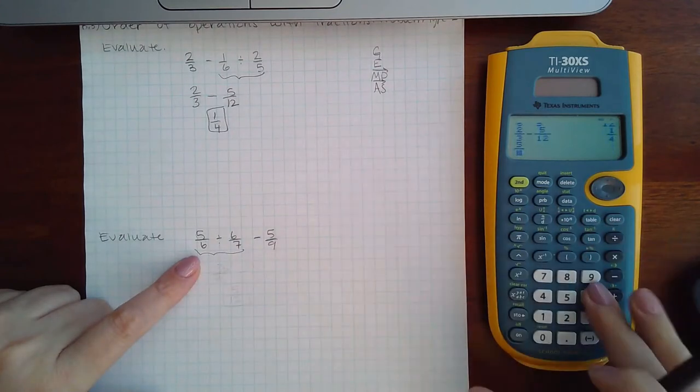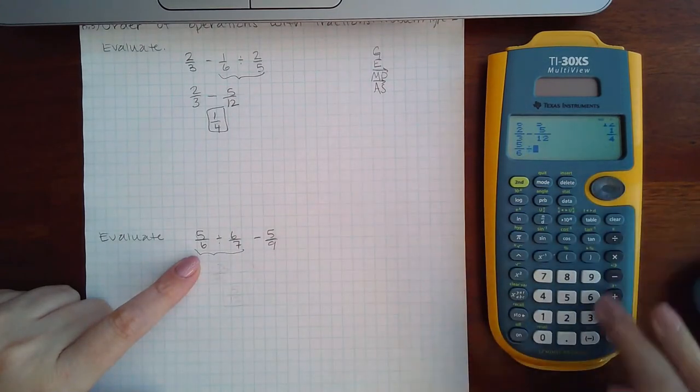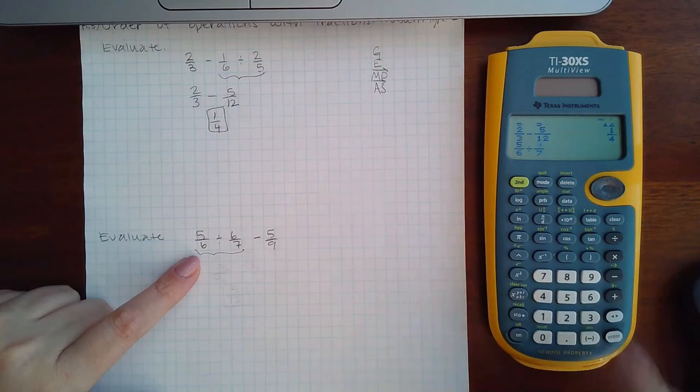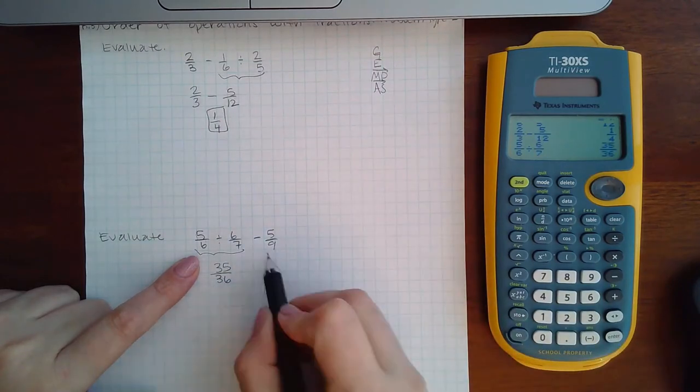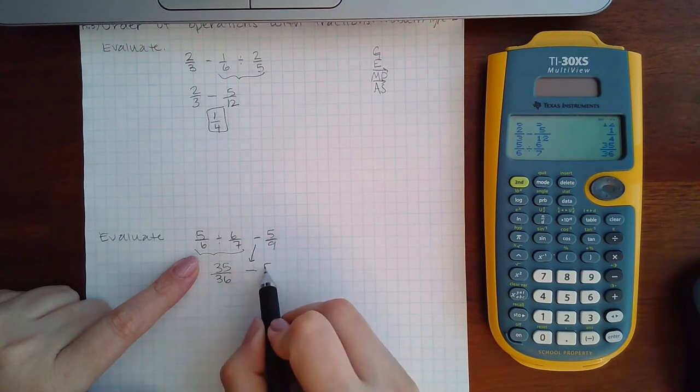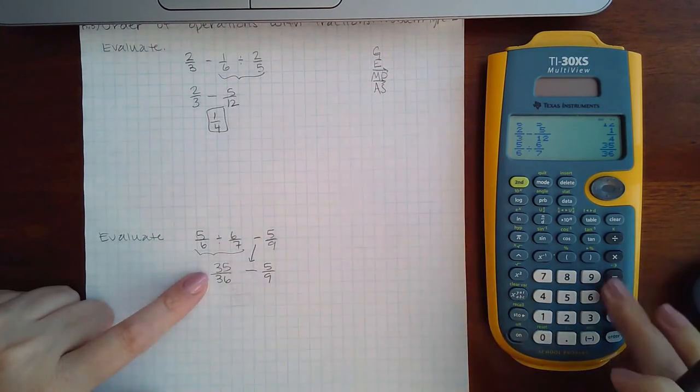Now for the next problem, no grouping, nothing to evaluate, so go multiply and divide. Divided by six over seven, I get 35 over 36.